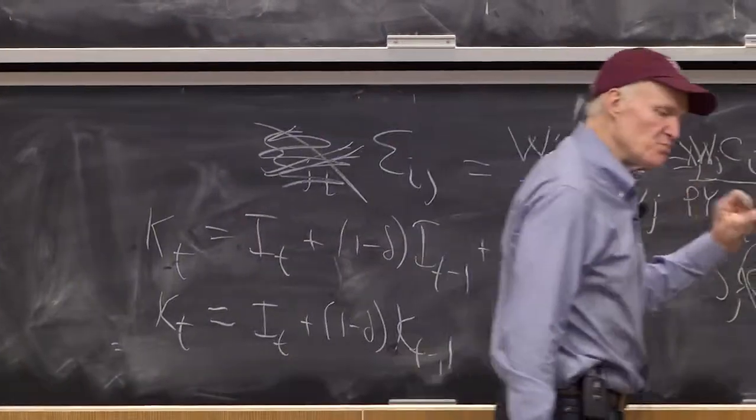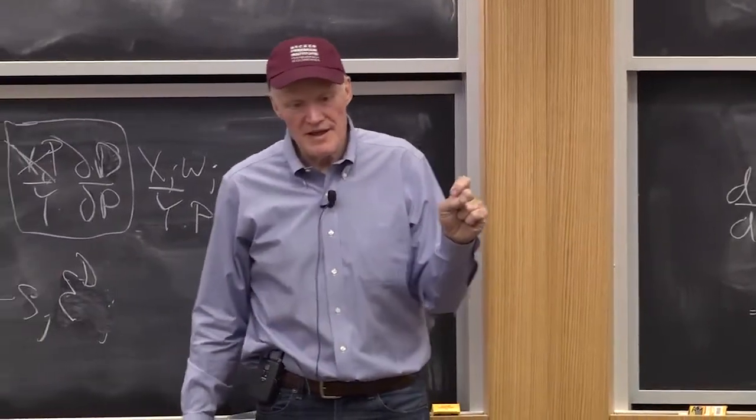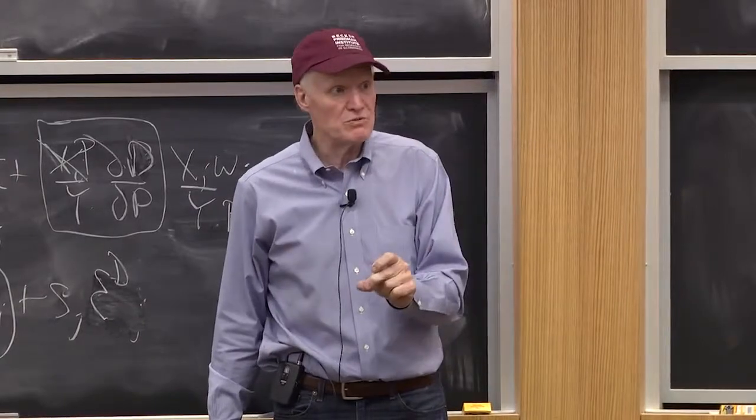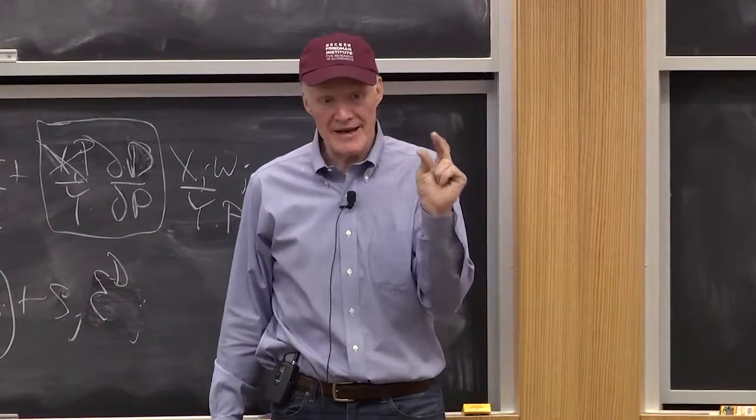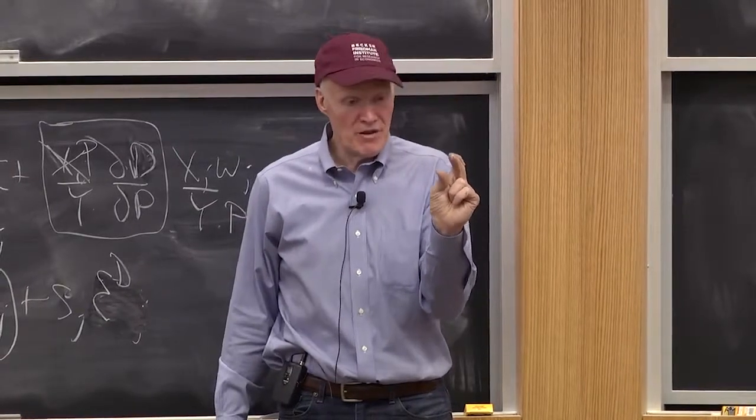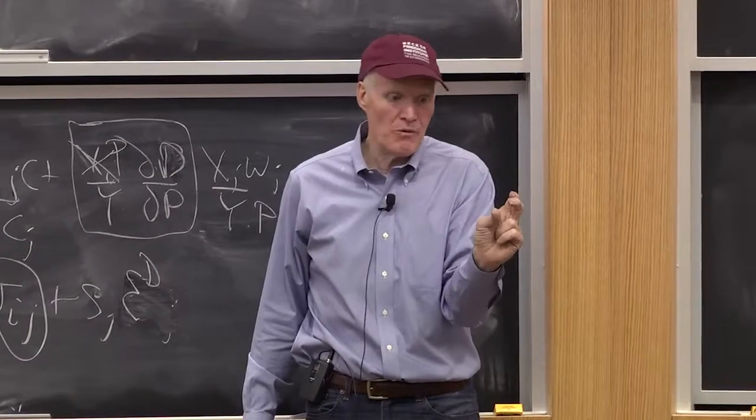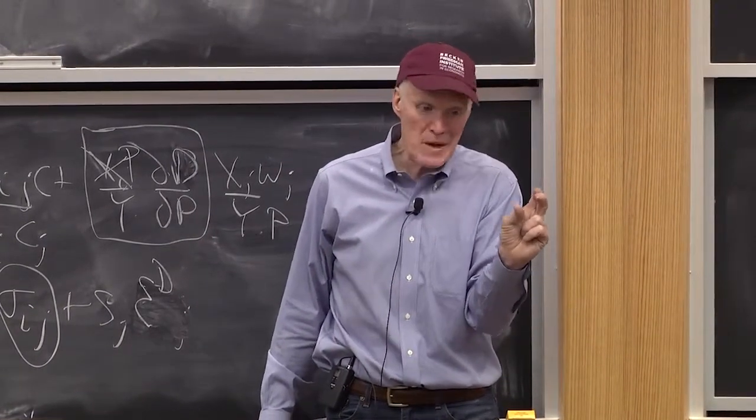If I had non-exponential depreciation but maintained that capital of different ages was perfect substitutes, I could still construct a capital aggregate at each date. I'd aggregate them according to how good they are relative to one another.